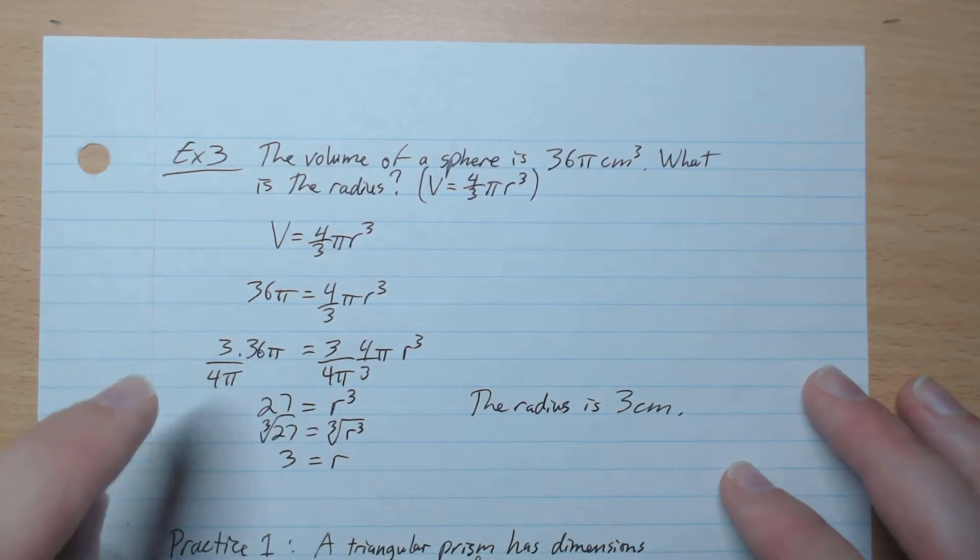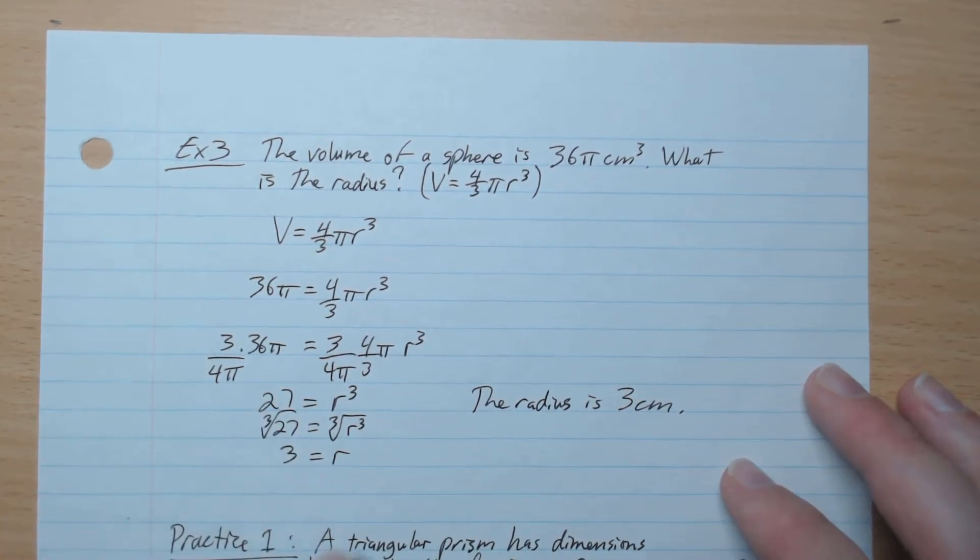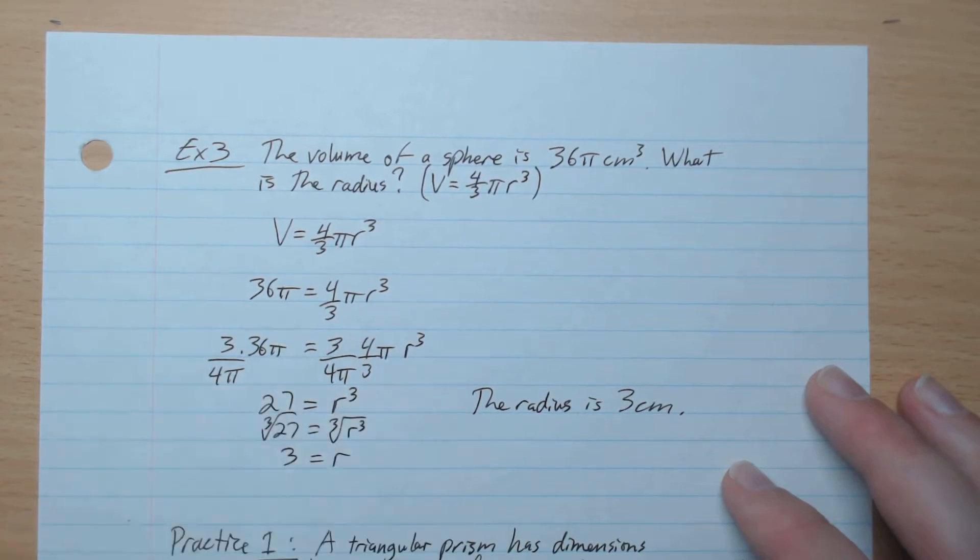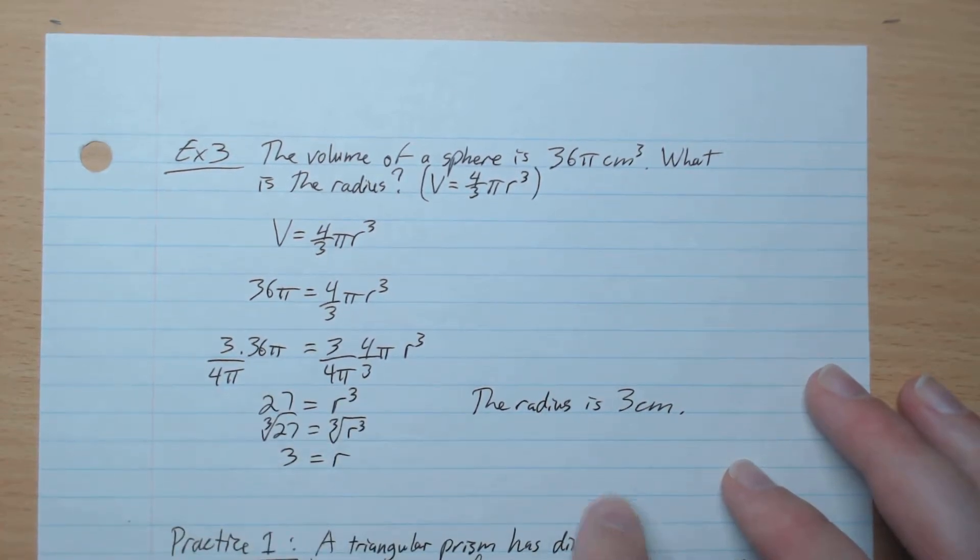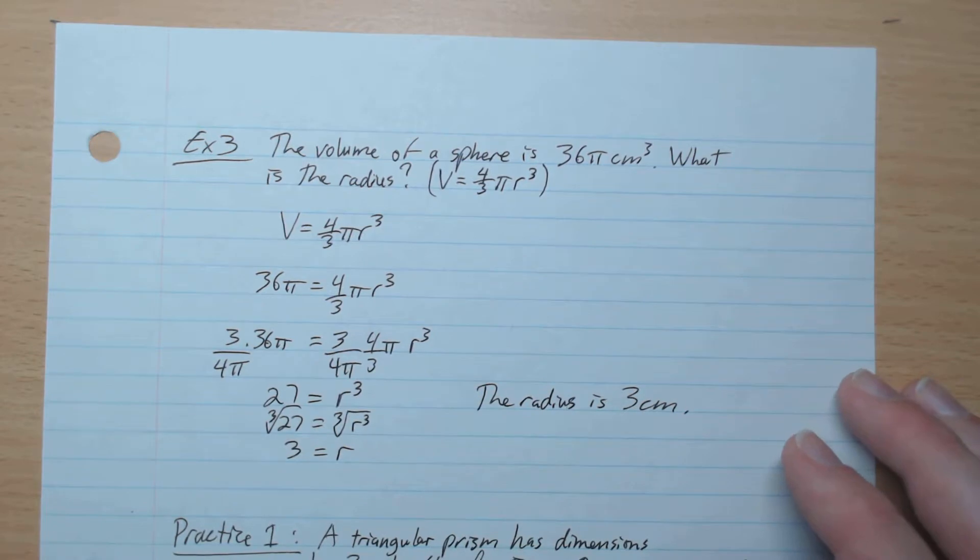and what's left is r³. And then these π simplifies. 3 times 36 divided by 4 gives 27. And so r on its own. So we cube root both sides, and which gives r equals 3. So the radius is 3 centimeters.